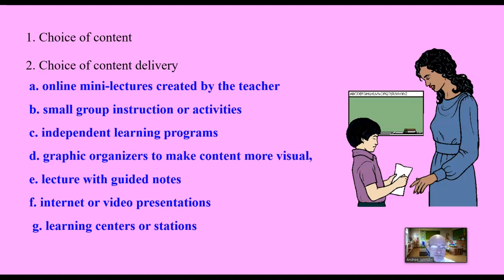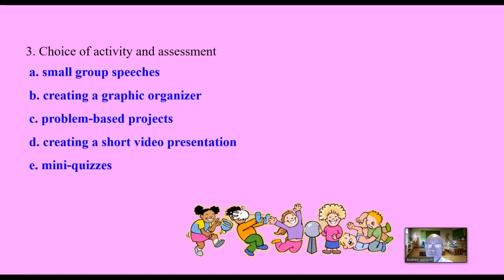Choice of content delivery — depending on the age, you might ask: mini lectures? Small group instruction? Internet, video, learning centers? Allow for choice. Pick one or two of these ideas and experiment to see what works. Choice of activities — an activity could be homework to practice learning. And for assessment: how do you want to demonstrate your learning? Small group speeches, graphic organizers, problem-based tasks, short video presentations, mini quizzes. This doesn't mean total choice all the time, but allowing some choice some of the time. In contract learning, students are able to decide how they're going to demonstrate their learning.